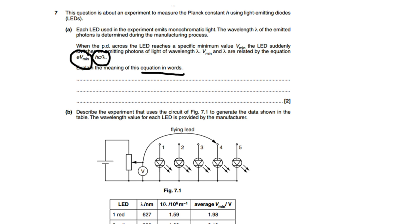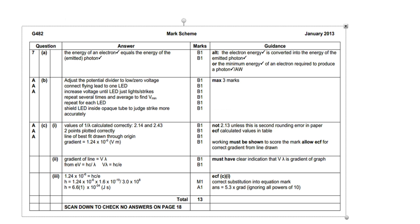If we flip back to our mark scheme, we were looking for one mark for the first mark. We were looking for the eVmin bit is the energy of the electron, and the hc over lambda bit is the energy of the photon. So they were our two parts that we were looking for there.